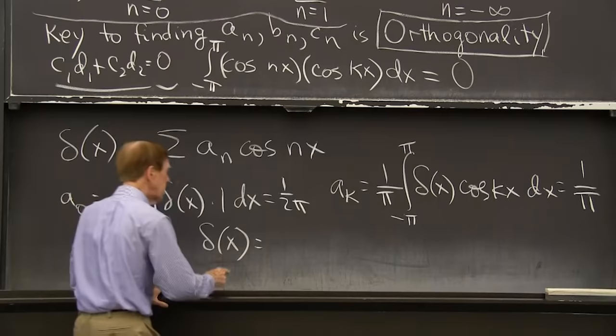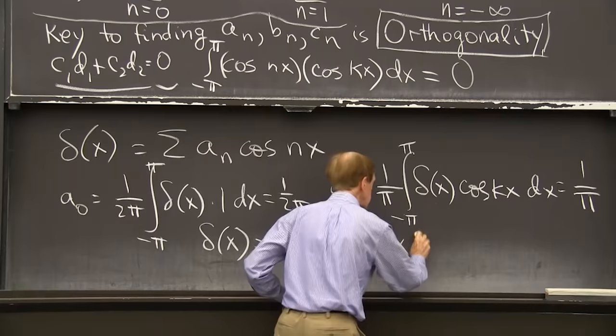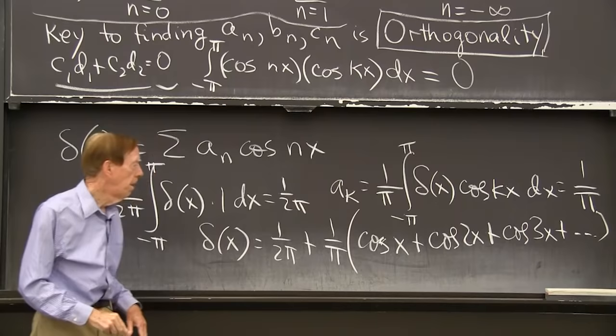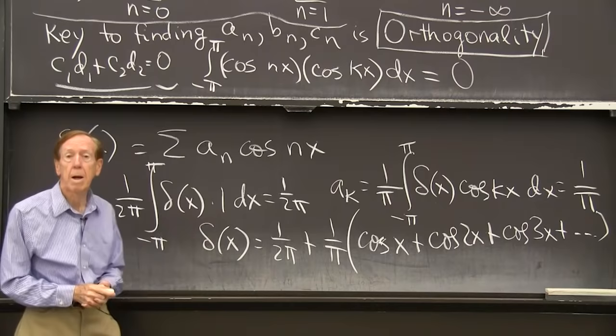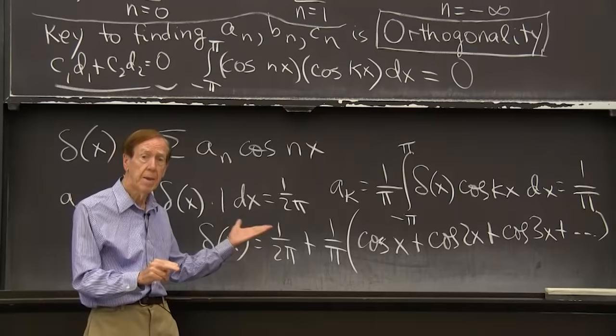They're just constant. OK. So I'm saying that the delta function is the constant term, 1 over 2 pi, and then 1 over pi times cosine of x and cosine of 2x, and so on. All frequencies there are the same. OK. And I'll stop with that one example here. So the key points were orthogonality, the formulas for the coefficients, and this example. Thank you.